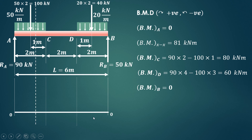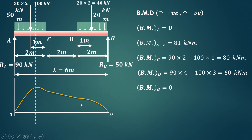Now we draw the bending moment diagram using these values: zero at A, rising to a maximum of 81 kNm at x equals 1.8 m (with a parabolic curve due to the UDL), then 80 kNm at C, a straight line from C to D giving 60 kNm at D (no load between C and D), another parabolic curve from D to B due to the UDL, and returning to zero at B. This completes the shear force and bending moment diagram for this simply supported beam with distributed loads.